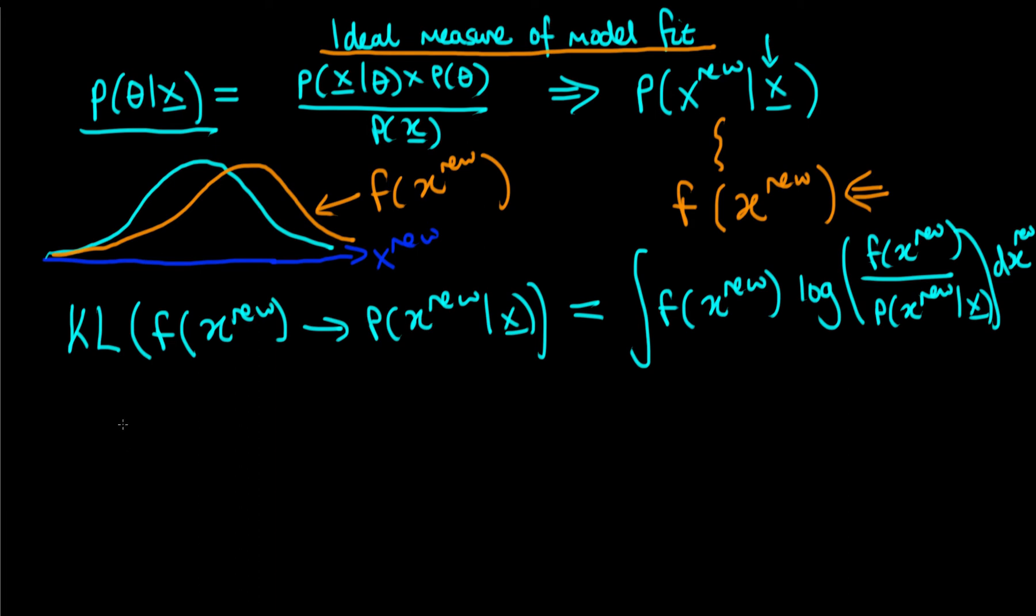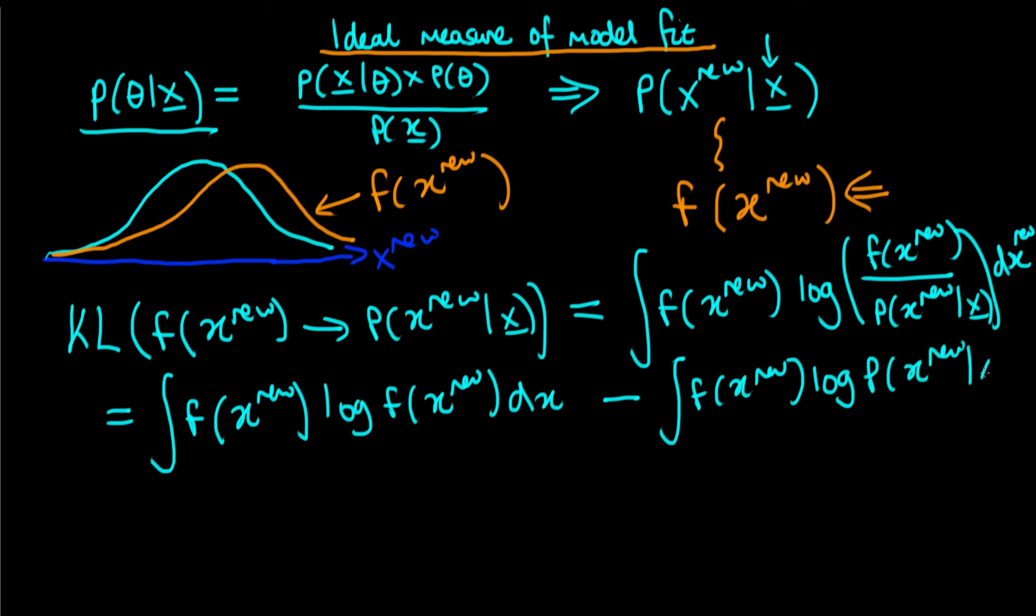And what we can do is we can actually expand this right-hand side. So what we get now is we get two integrals. We get an integral of F of X new times the log of F of X new times DX, or integrated with respect to DX, minus the integral of F of X new times the log of P of X new given X integrated with respect to X.